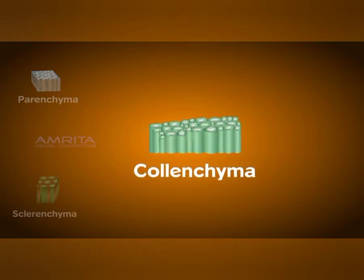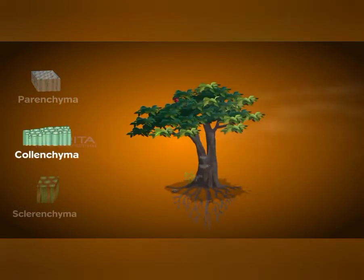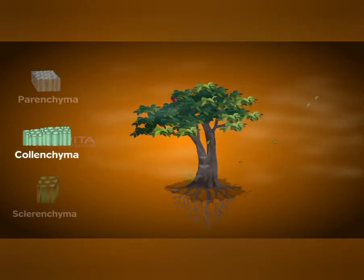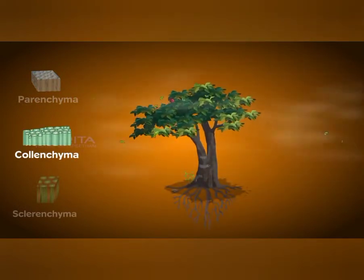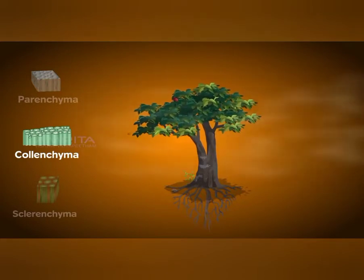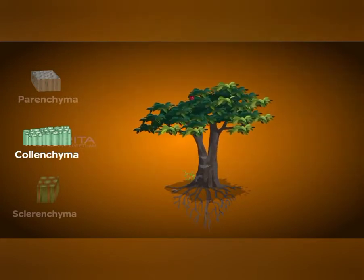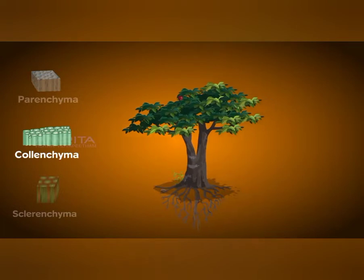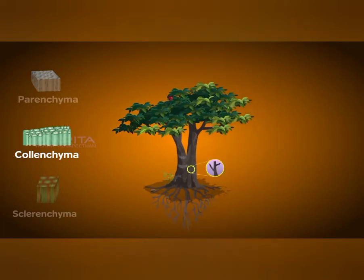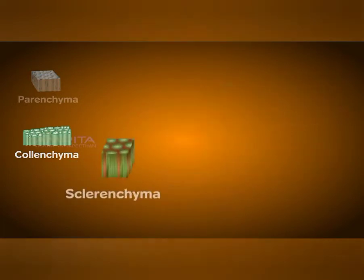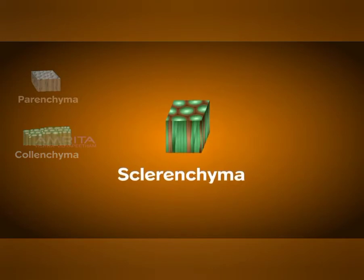Colenchyma's cells are oval or polygonal and they contain cellulose and pectin depositions in the corners, and they offer structural support to the plant. It offers elasticity to young plants and leaves also. They are seen in the stems, mid-ribs, and veins of the leaves.